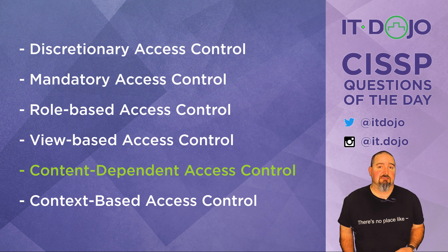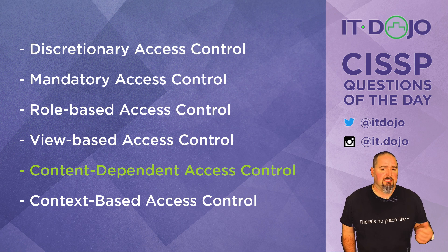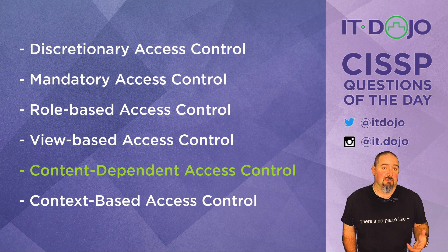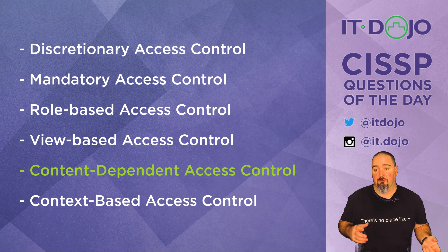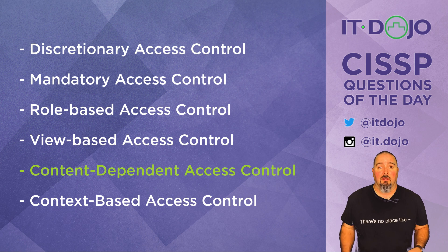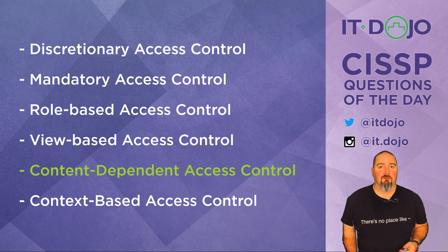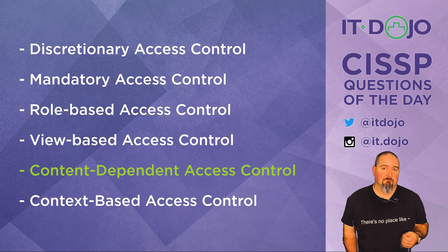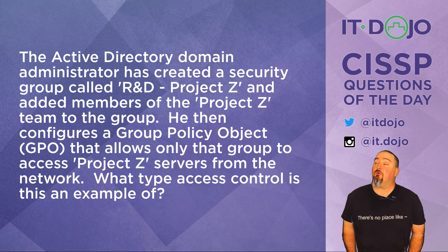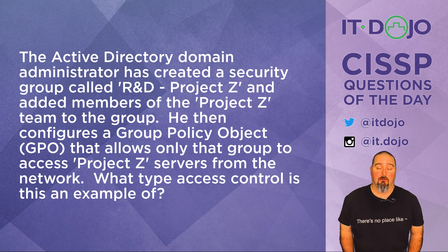The last answer choice, context-based access control, is also not appropriate here. Context-based access control is very often seen conceptually in things like firewall rules, where you say: if traffic is coming from here and going to here, then in that context it's allowed — but nothing to do with what the actual content is, at least not in basic firewall rules. Okay, question number two — apologies for the lot of words.